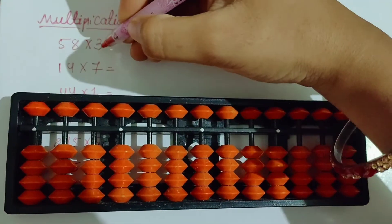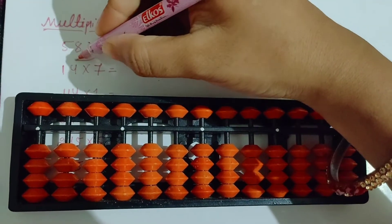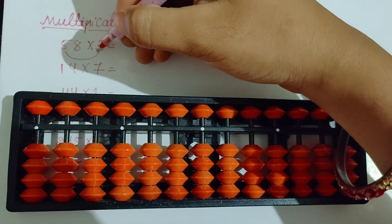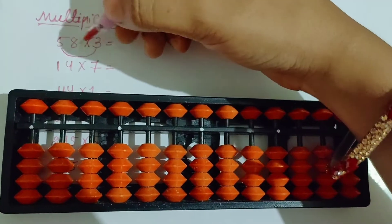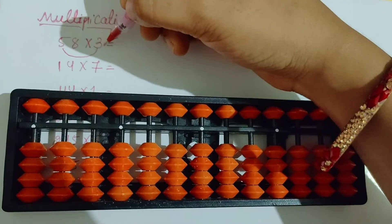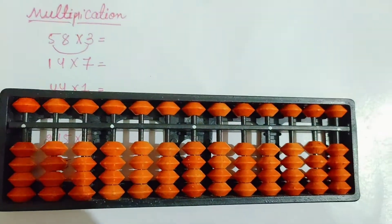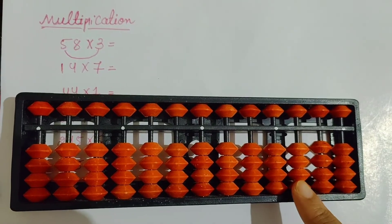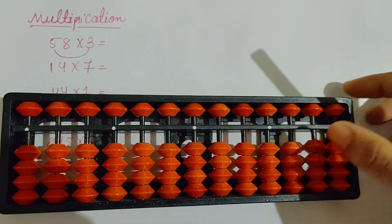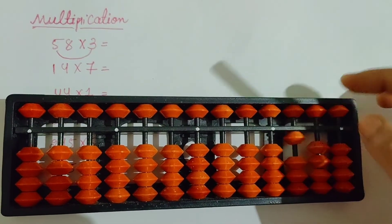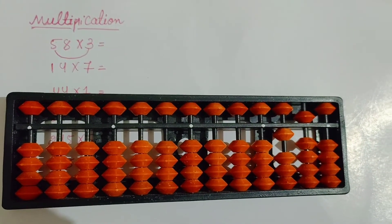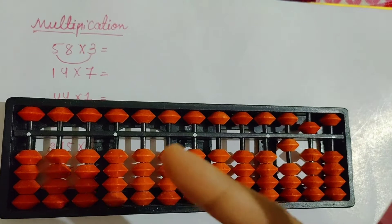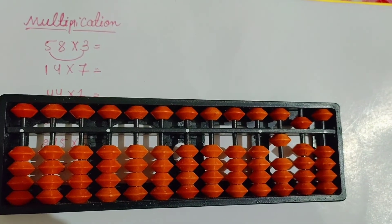So first you will multiply with the first number, then you will multiply with the second number. Here the first number is 5. So first you will multiply 3 with 5. 3 digit question is there, so you will start the answer from third row. So 3 5s are 15. After that 3 8s are 24.